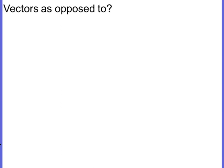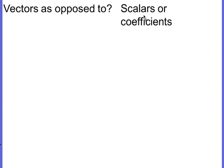Now, to vectors. What is something that is not a vector? Scalars are things that are not vectors, but coefficients are also things that are not vectors. Remember that a vector is something which has size and direction. A scalar is something that only has size, no direction. And a coefficient is something which has neither size nor direction.